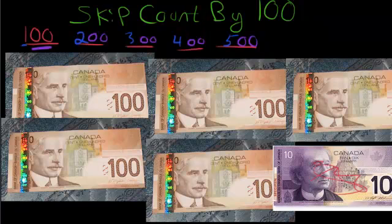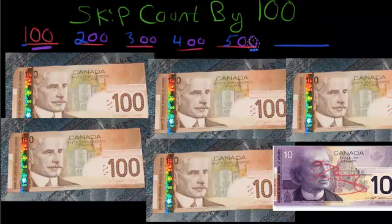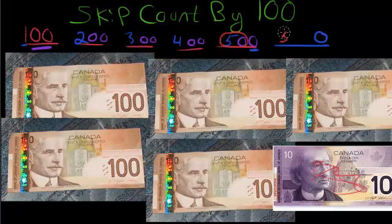Now let's throw in the $10 bill at the end and combine the last rule with this one. We're done counting by 100s. Now we count by 10s again, using the rule for 10: hold only the last number, and change everything to the left of it. We have 500 over here, so looking at both digits, 500 becomes 510. If you count all this money, it would be $510.